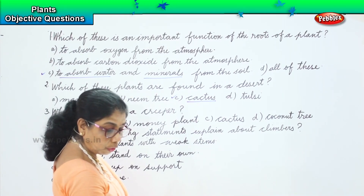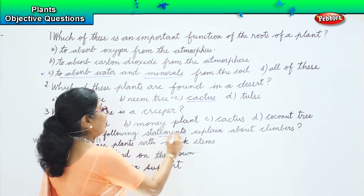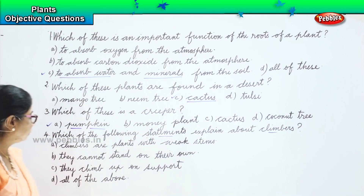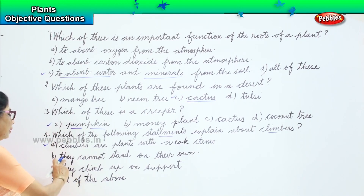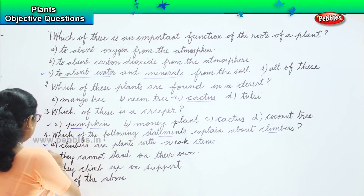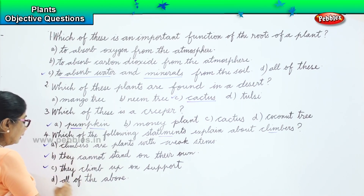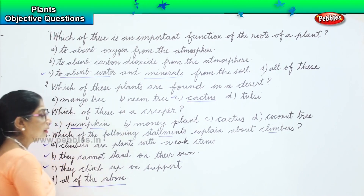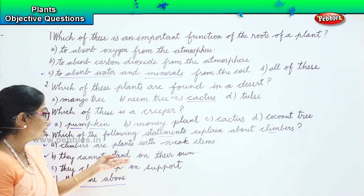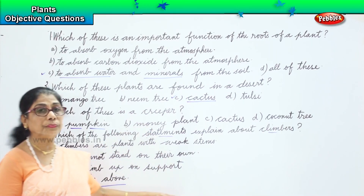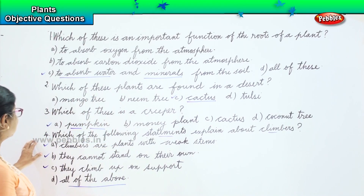Let us look at which is the correct one. Climbers are plants with weak stems — yes, that's correct. They cannot stand on their own — yes, option B is a correct statement. They climb up on support — yes, that's correct. So D — all of the above statements — are correct. They all explain about climbers.